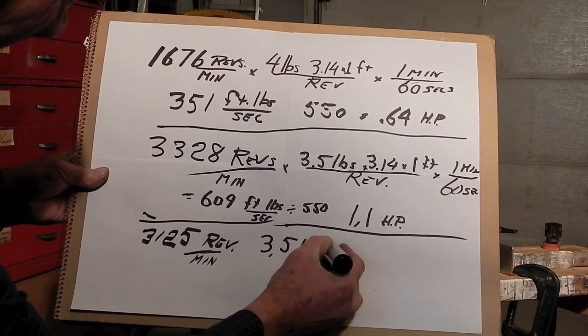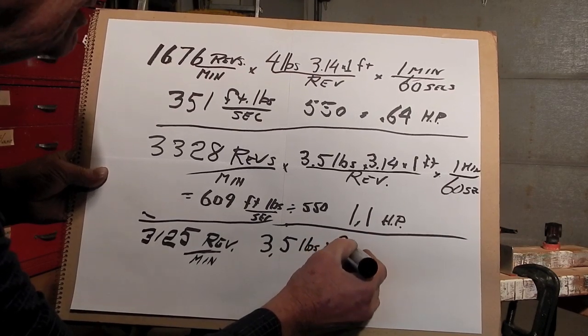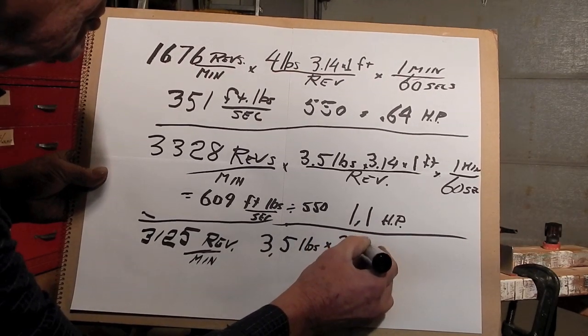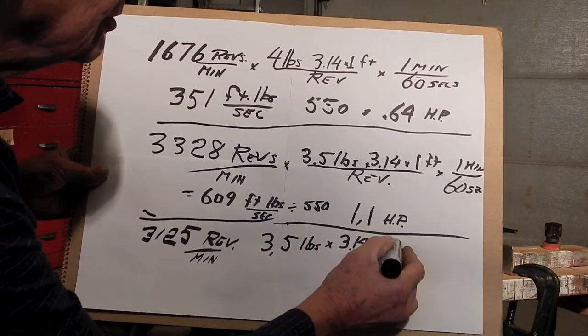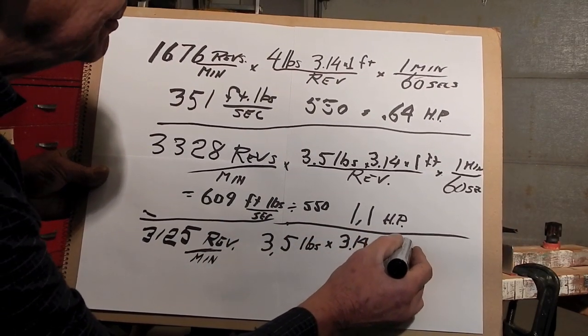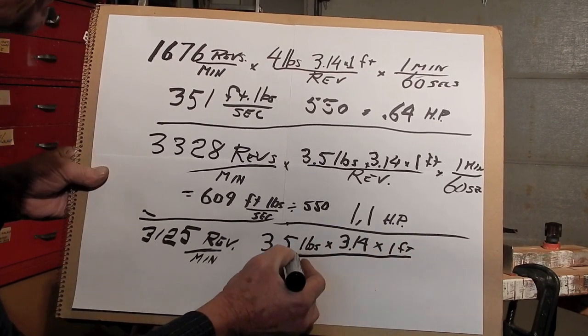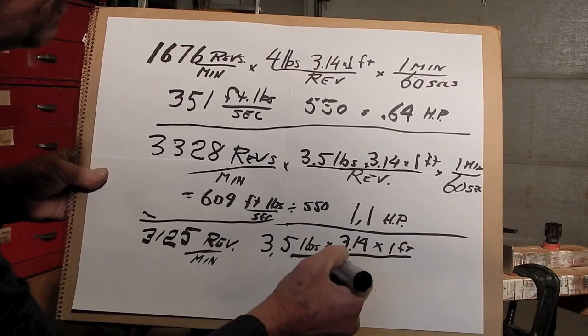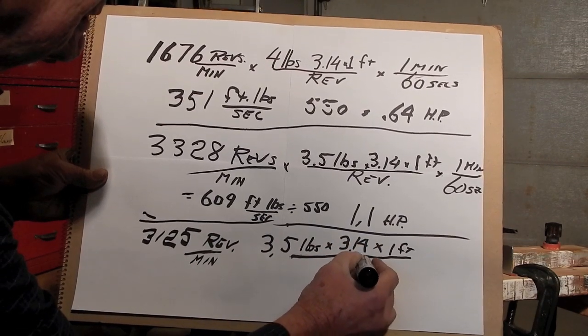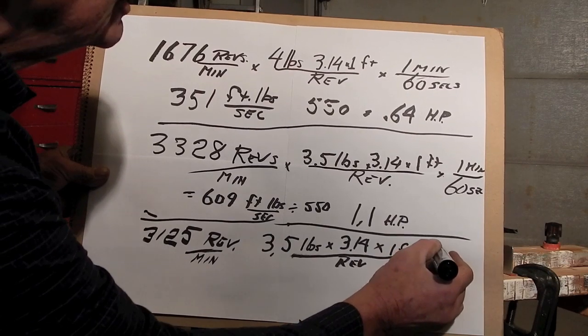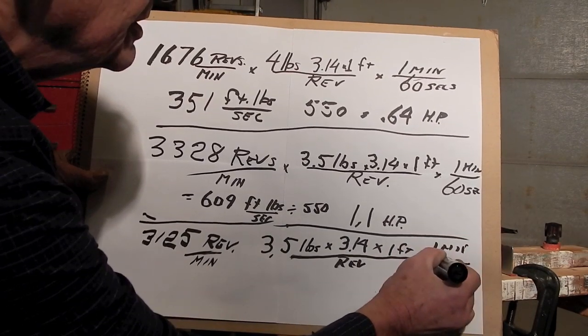Multiply that by pi to get the circumference of one revolution times one foot diameter. That's pounds-feet force per revolution times one minute over 60 seconds.